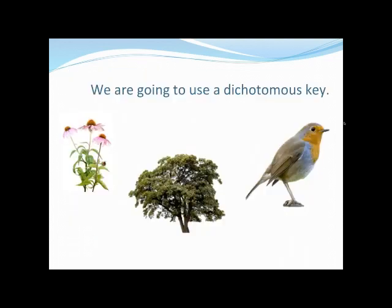We're going to use a dichotomous key for the first part of this presentation to determine what the nutrient deficiencies are. Many of you have probably used a dichotomous key to identify flowers, trees, or birds in field guides. It asks a question with two possible answers, and depending on how you answer, it takes you down one path or the other. It's a very simple process of elimination.